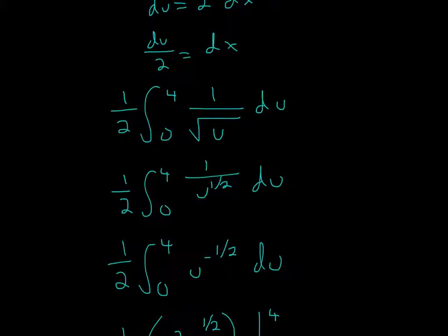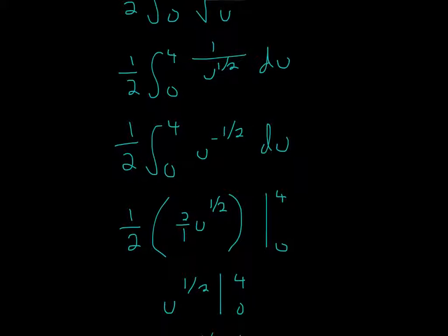Now you rewrite it one more time. u to the 1/2 power in the denominator can be rewritten as u to the negative 1/2 power. Once you do that, you can use the integration rule, which says add 1 to the exponent.